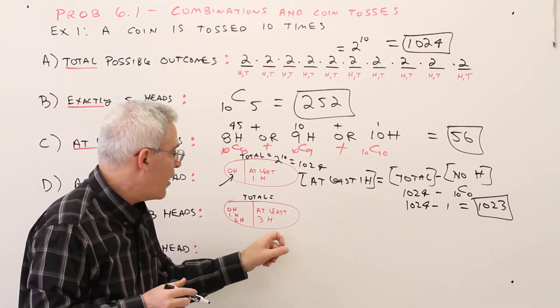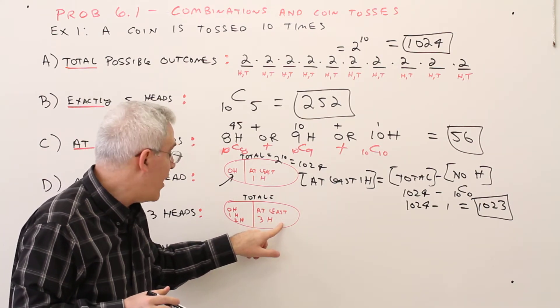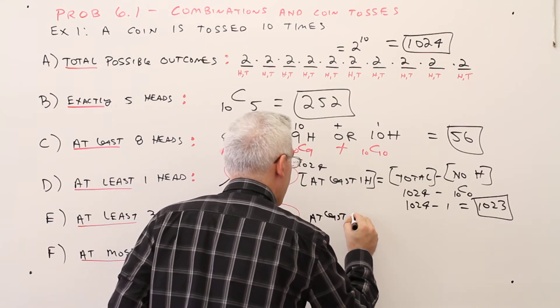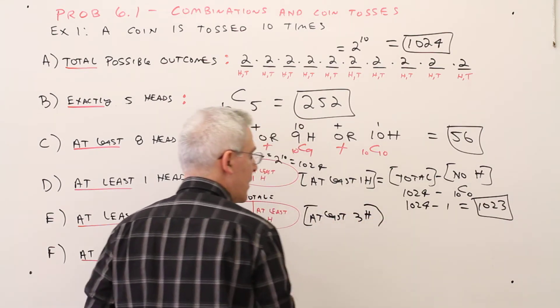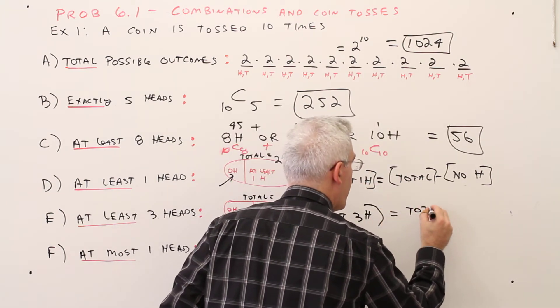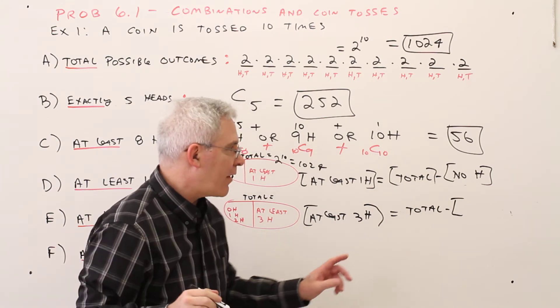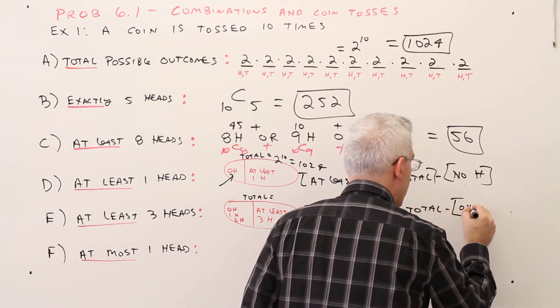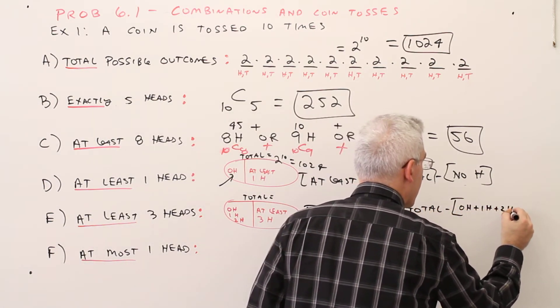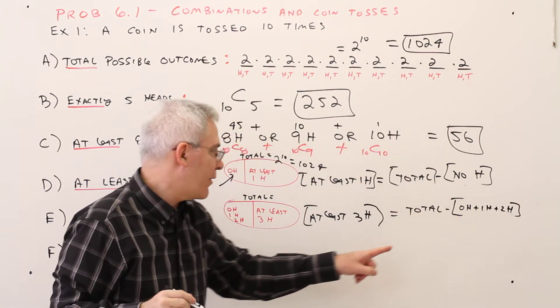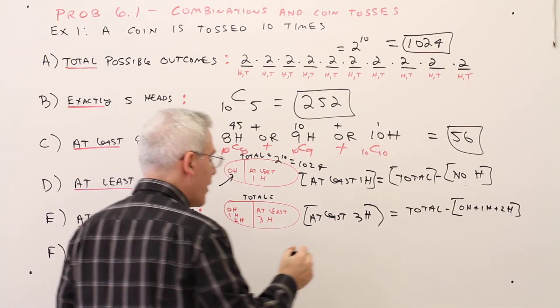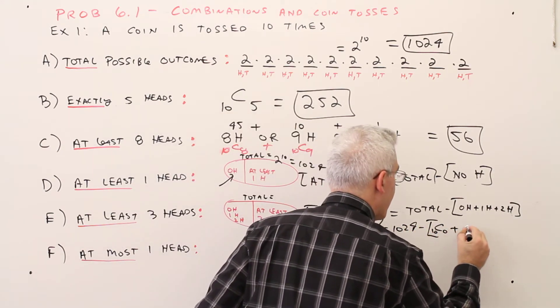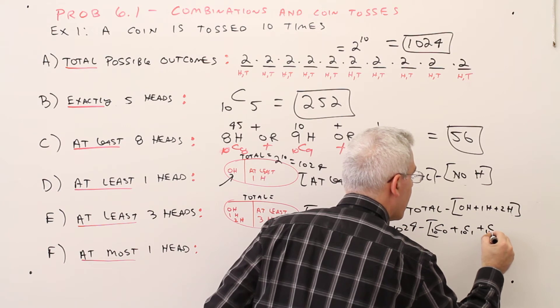So what I'm going to do is say if I've got at least 3 heads, if I don't have at least 3 heads I've got 0, 1 or 2. So I'll say at least 3 heads equals total minus, now in this case instead of no heads it's going to be 0 heads or 1 heads or 2 heads. 0 heads plus 1 heads plus 2 heads. Still fewer computations doing it this way as opposed to adding them all up.